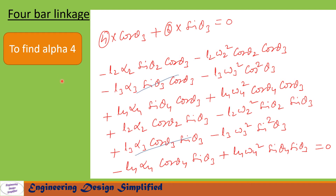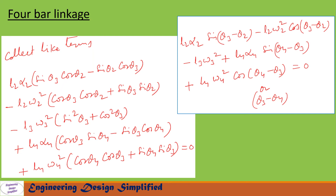To find α4, the angular acceleration of the follower link, we use the same technique: multiply Equation 4 by cosθ3 and add Equation 6 multiplied by sinθ3, equated to zero. The terms −L3·α3·sinθ3·cosθ3 and +L3·α3·cosθ3·sinθ3 cancel. After collecting like terms and rearranging we get: L2·α2·sin(θ3−θ2) − L2·ω2²·cos(θ3−θ2) − L3·ω3² + L4·α4·sin(θ4−θ3) + L4·ω4²·cos(θ4−θ3) = 0, and cos of (θ4−θ3) equals cos of (θ3−θ4).